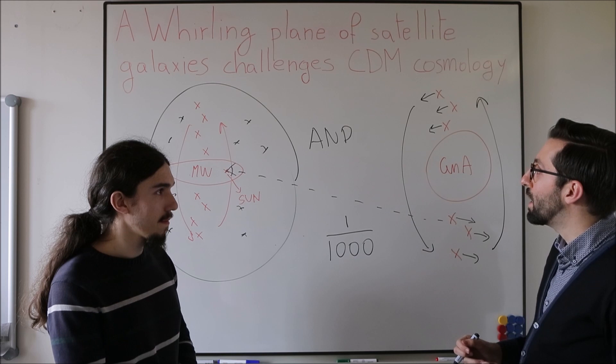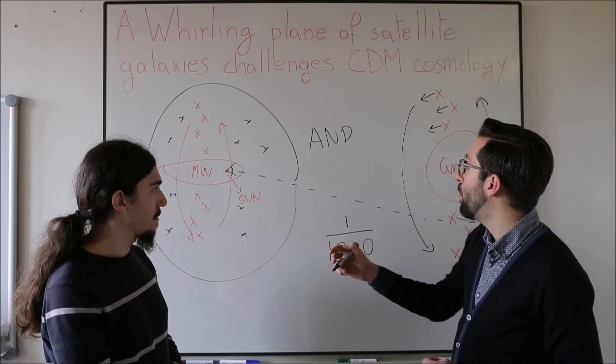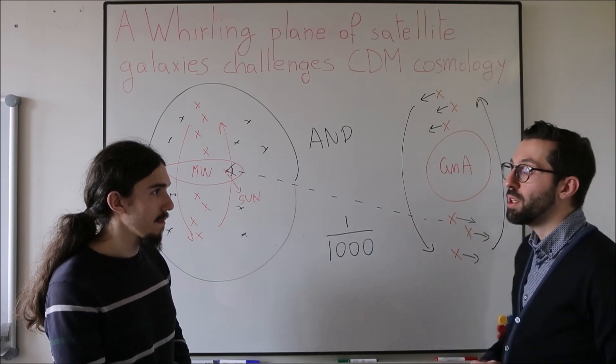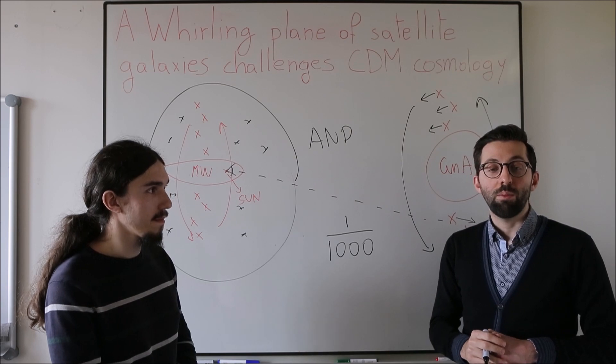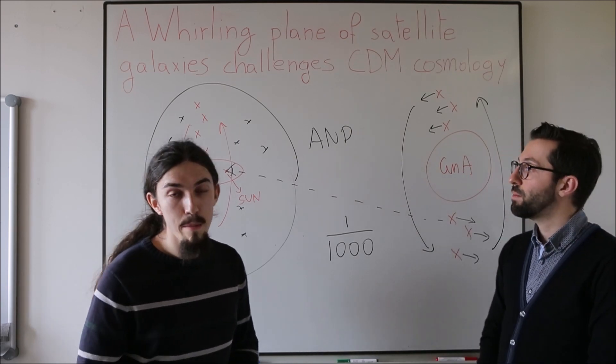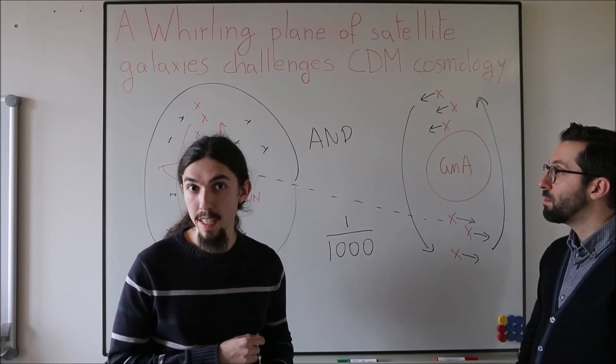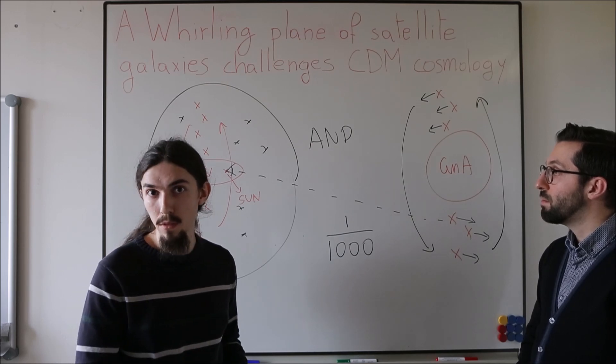However, the three best-studied galaxies in the universe, Milky Way, Andromeda and Centaurus A, all show co-rotating planes of satellites. There may be many more dwarf satellite systems out there, which still need to be discovered.